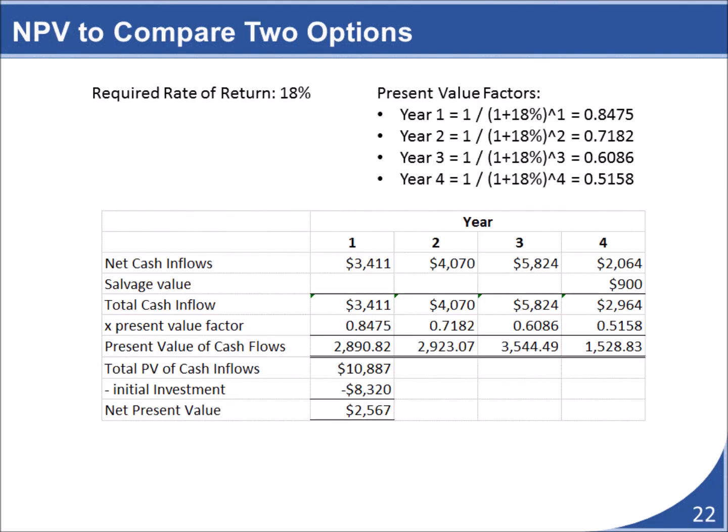This slide shows the result of applying the present value formula to each of the projected cash flows. The pizza oven project would result in a positive cash flow that is above the required 18% rate of return. Therefore, based on these calculations, this project should be approved.